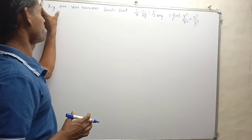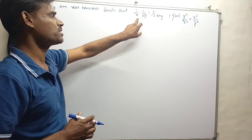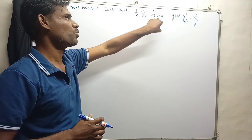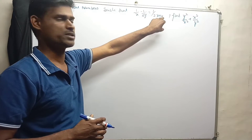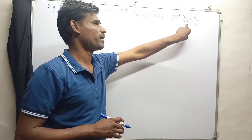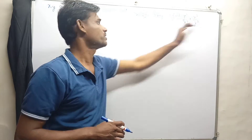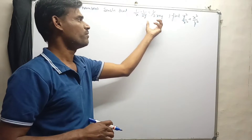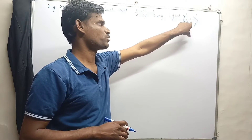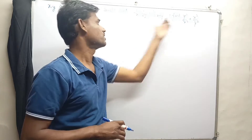The question is: if x and y are real numbers such that 1/x minus 1/(2y) equals 1/(2x + y), then find y²/x² + x²/y². We have to find out the value of y²/x² + x²/y².